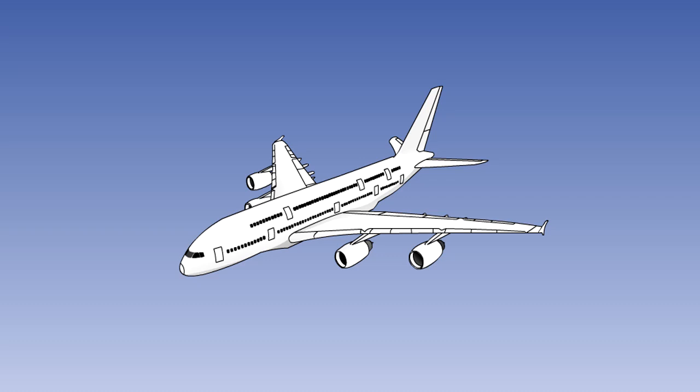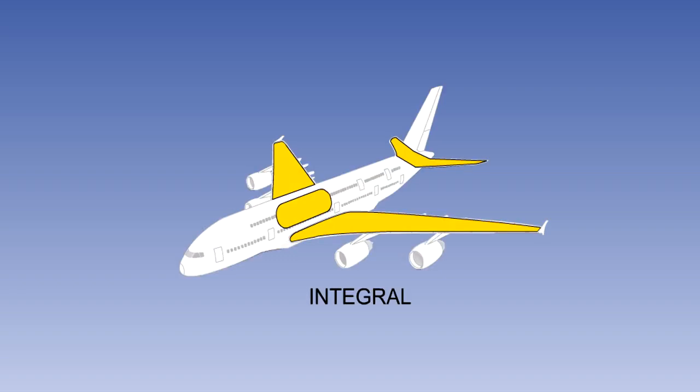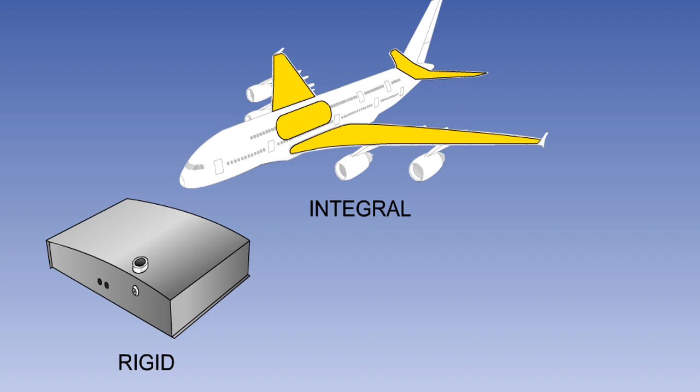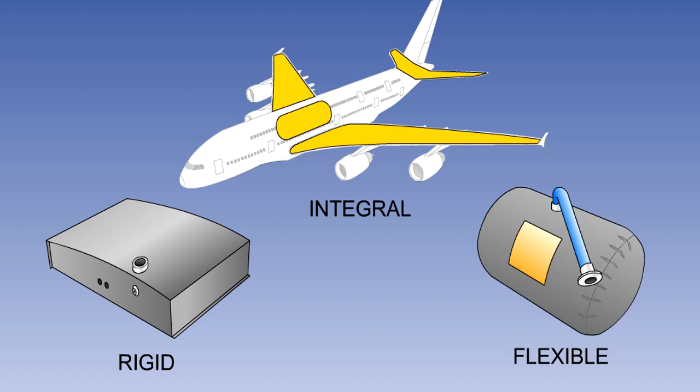In this short lesson we will examine the various methods used for storing fuel on board an airplane. The fuel is carried in or on the aircraft within tanks, which can be integral, rigid or flexible.